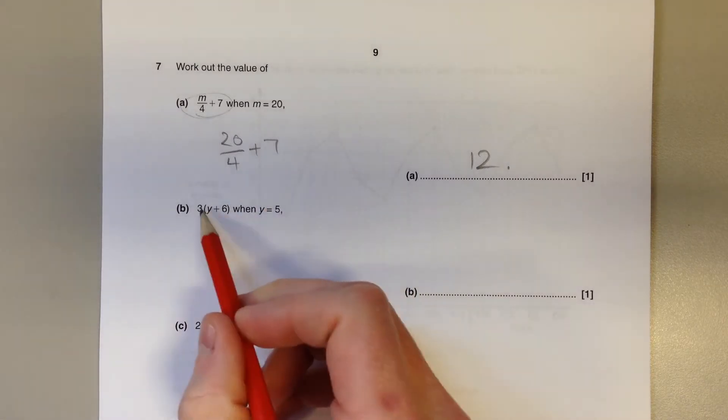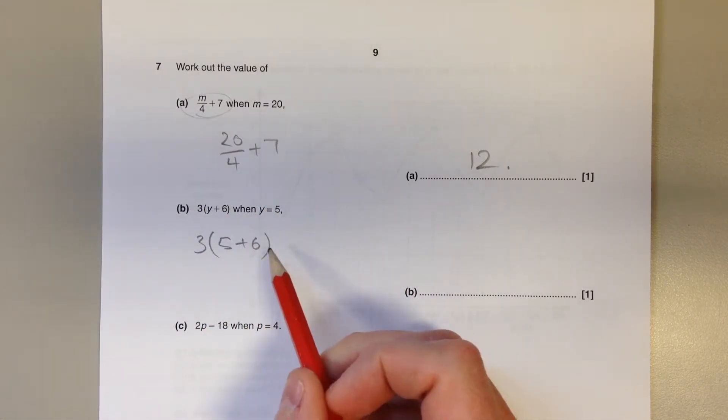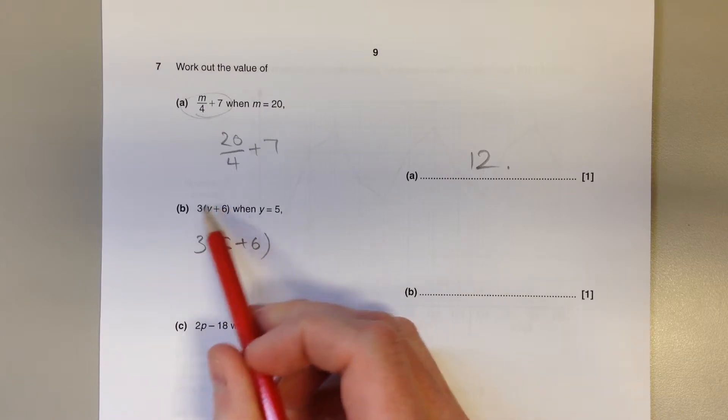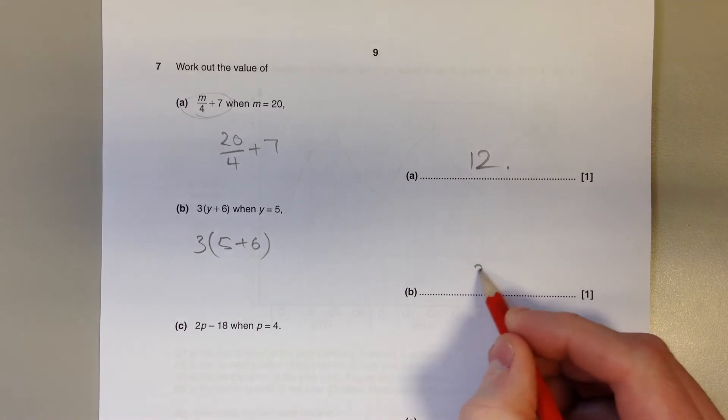With this particular one, replace the y with 5. Of course, remember, work out the bit in the brackets first. 5 plus 6 is 11, and then we've got 3 lots of 11, which is 33.